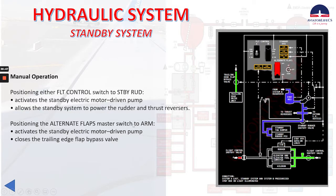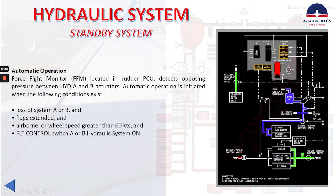Positioning the alternate flaps master switch to arm activates the standby electric motor driven pump and closes the trailing edge flap bypass valve. For automatic operation, a force fight monitor located in the rudder PCU detects opposing pressure between hydraulic A and B actuators. Automatic operation is initiated when the following conditions exist: loss of system A or B, and flaps extended and airborne, or wheel speed greater than 60 knots, and flight control switch A or B hydraulic system on.